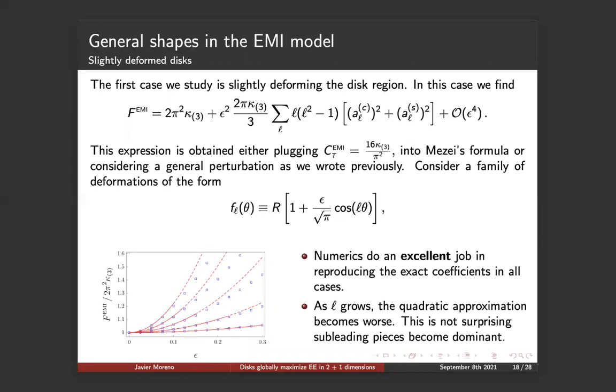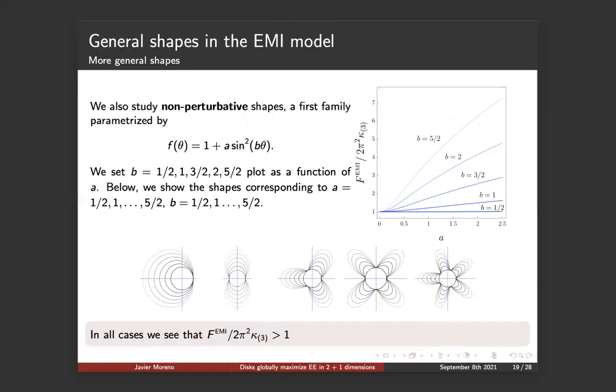We see that indeed for small epsilon, numerics do an excellent job reproducing the exact coefficients in all cases. But of course, as L grows, the quadratic approximation becomes worse. This is not surprising because the sub-leading pieces should become dominant. We can also go to other non-perturbative shapes. We will study two different families. One of them is parametrized by this equation here, one plus A sine squared of B theta, where B are these concrete values. And A is a running constant that we are going to check different values. Here we plot in this cartoon the different cases. So this is for B equal one half, B equal one, three halves, two, and five halves. And this running of A will do this kind of figures. These gray figures are expanding as A increases.